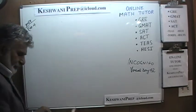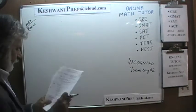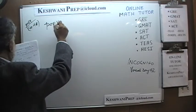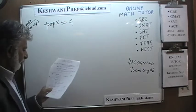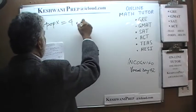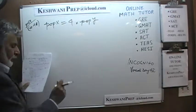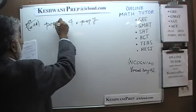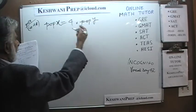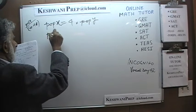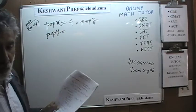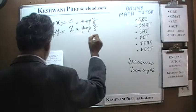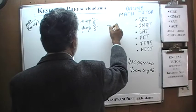Number 48. In number 48 we are told that we have three towns. Population of town X is 4 times the population of town Y. We are further told that population of town Y is 2 times the population of town Z. And the question is: what is the ratio of X to Z?